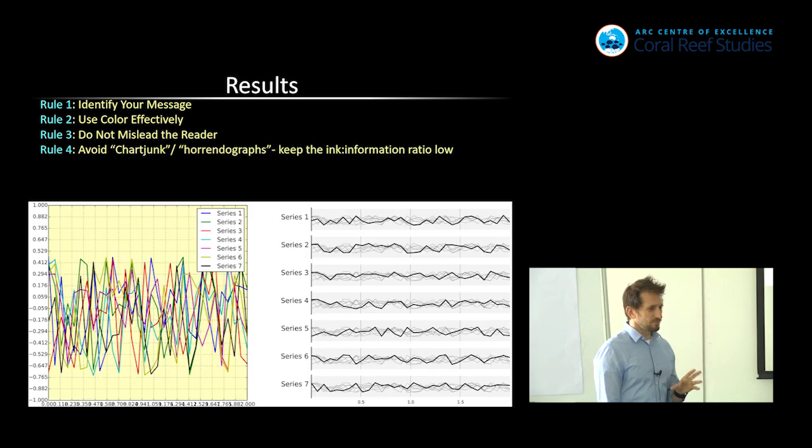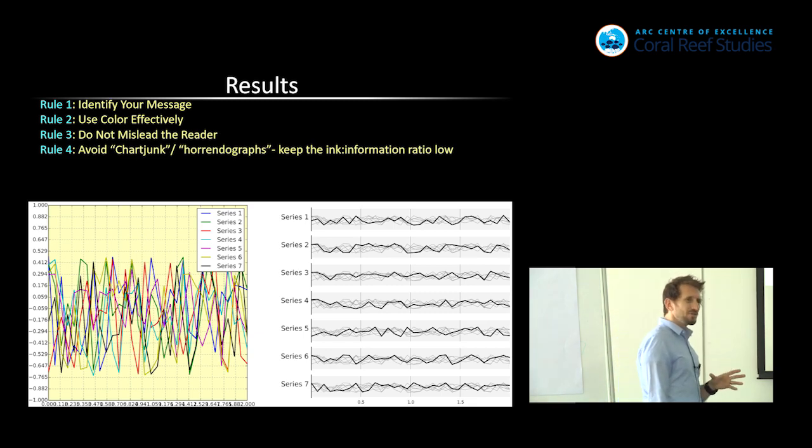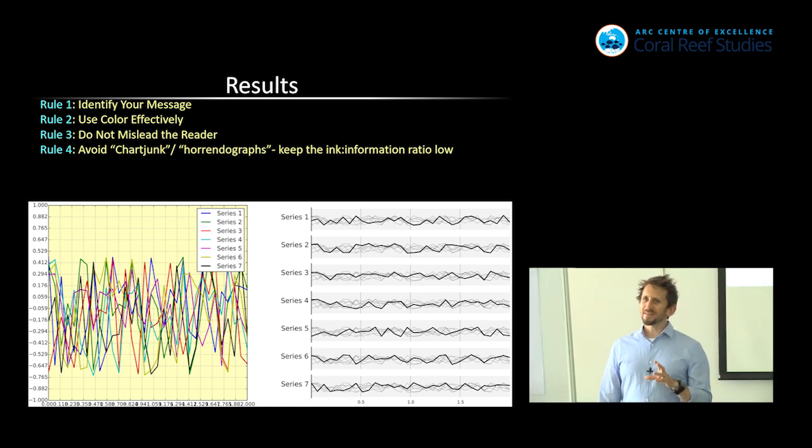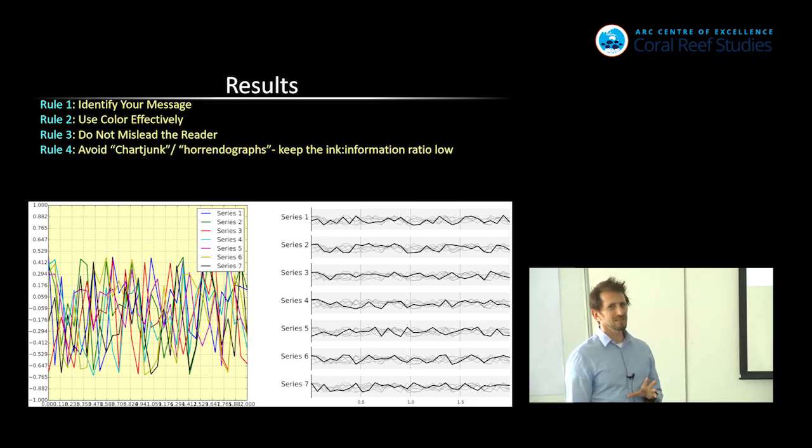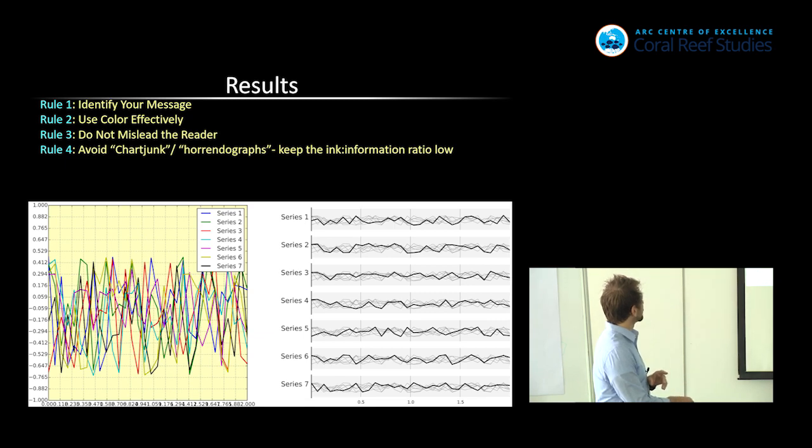So the fourth rule, which is a really important one, is to avoid what they call chart junk. But what I heard a couple years ago described as a horrendograph, and I love that better. And one way of thinking about it that I learned years ago that I really like is that you want to keep the ink to information ratio as low as possible. Can you convey the same information with less ink on the page? And if you can, do it. Minimize the ink to information, sorry, maximize the ink to information ratio. Minimize the ink on the page to say the same thing.